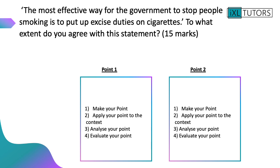This is a typical style of question where you can discuss behavioral economics — a 15-mark discuss question. The statement is: 'The most effective way for the government to stop people smoking is to put up excise duty on cigarettes.' To what extent do you agree? For a 15-mark question you make two points; both must be applied in context, analyzed, and evaluated. Remember you do not need a conclusion. Make a plan for this question and then start answering it.